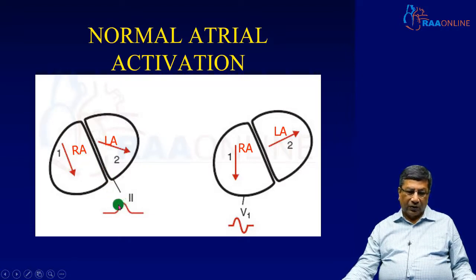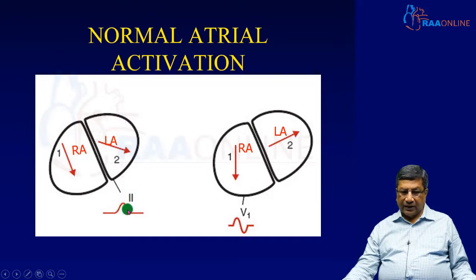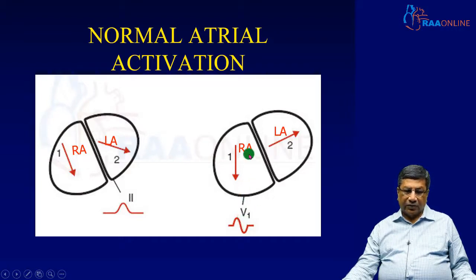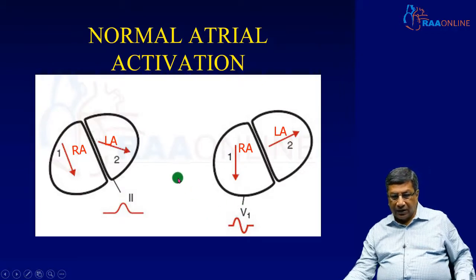Lead L2 will show both right atrial and left atrial depolarization as a positive complex, so the P wave in L2 is totally positive. Because the right atrium is activated initially, the first half represents right atrial activation and the terminal half represents left atrial activation. In V1, which is a horizontal, anterior, right-sided lead, right atrial depolarization comes towards it and left atrial depolarization goes away from it. That is why the V1 P wave is biphasic — the initial component represents right atrial enlargement and the terminal negative component represents left atrial enlargement.